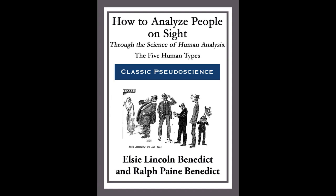Physical Solidity. A general solidity of structure, as distinguished from the softness of the alimentive and the resilience of the thoracic, characterises the muscular. Poke your finger into a fat man's hand, and though it makes a dent, that dent puffs back quickly. Do the same to a muscular, and you will find a firmness and toughness of fibre that resists, but stays there longer once the dent is made.